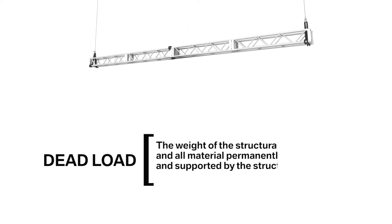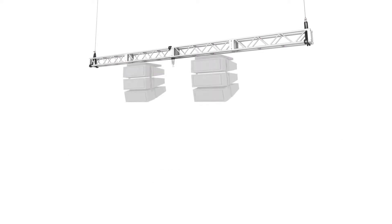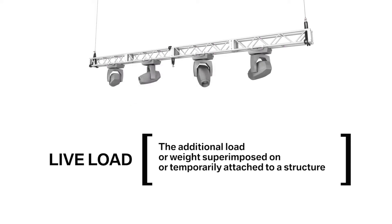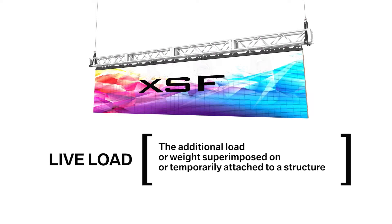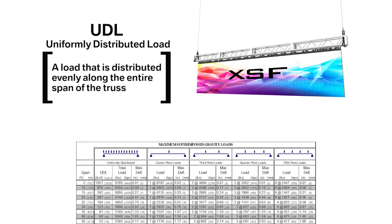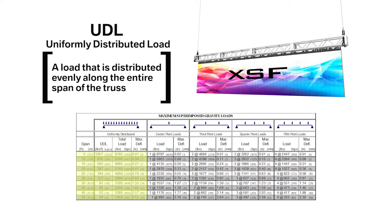First, let's define a few terms you'll need to understand the tables. Dead load is defined as the weight of the structural component and all material permanently attached to and supported by the structure. Live load is considered the additional load or weight superimposed on or temporarily attached to a structure. Uniformly distributed load, or UDL, is a load that is distributed evenly along the entire span of the truss. Examples of a UDL would be a curtain or video wall.